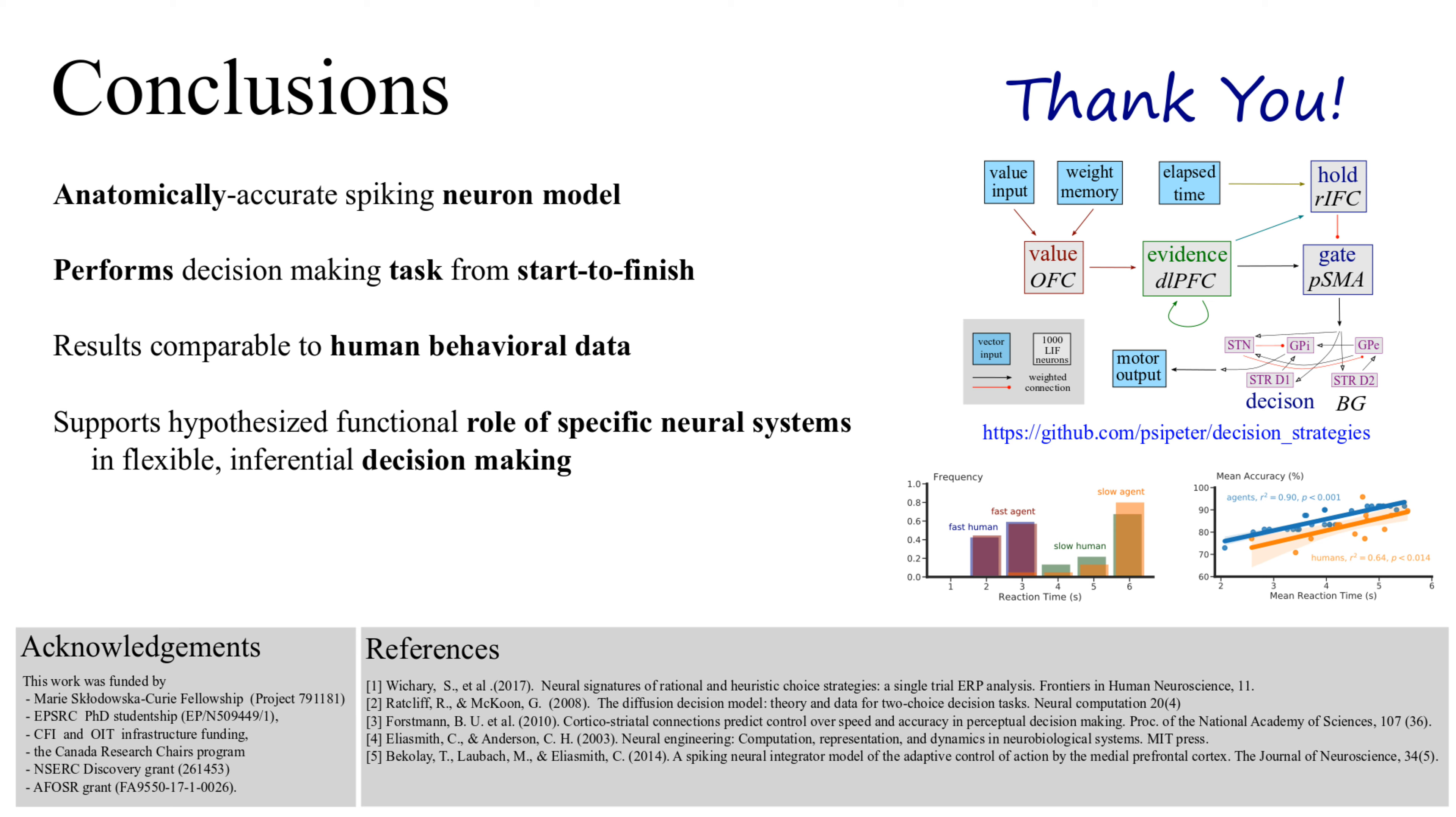In conclusion, our anatomically and functionally plausible neural model reproduces human behavioral data. Our results support the hypothesis that the neural systems which monitor urgency and uncertainty flexibly control decision making. Thank you.